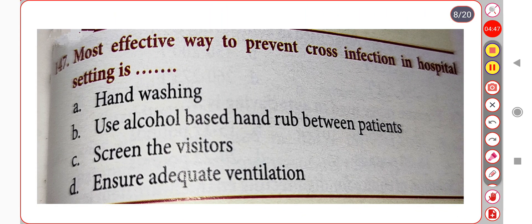Next question. The most effective way to prevent cross infection in a hospital setting is: Option A. Hand washing. Option B. Use alcohol-based hand rub between patients. Option C. Screen the visitors. Option D. Ensure adequate ventilation. Correct answer is Option A: Hand washing.